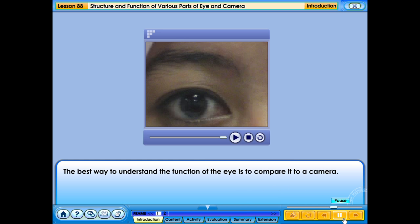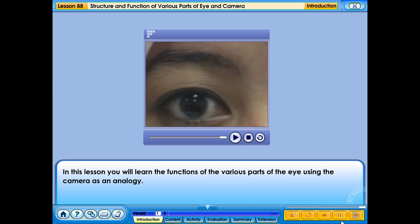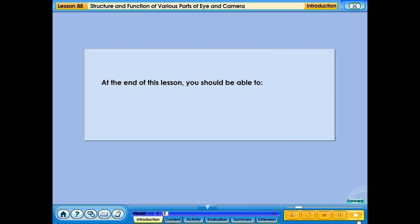The best way to understand the function of the eye is to compare it to a camera. In this lesson, you will learn the function of the various parts of the eye using the camera as an analogy. At the end of this lesson, you should be able to explain the structure and function of various parts of the eye using a camera as an analogy.